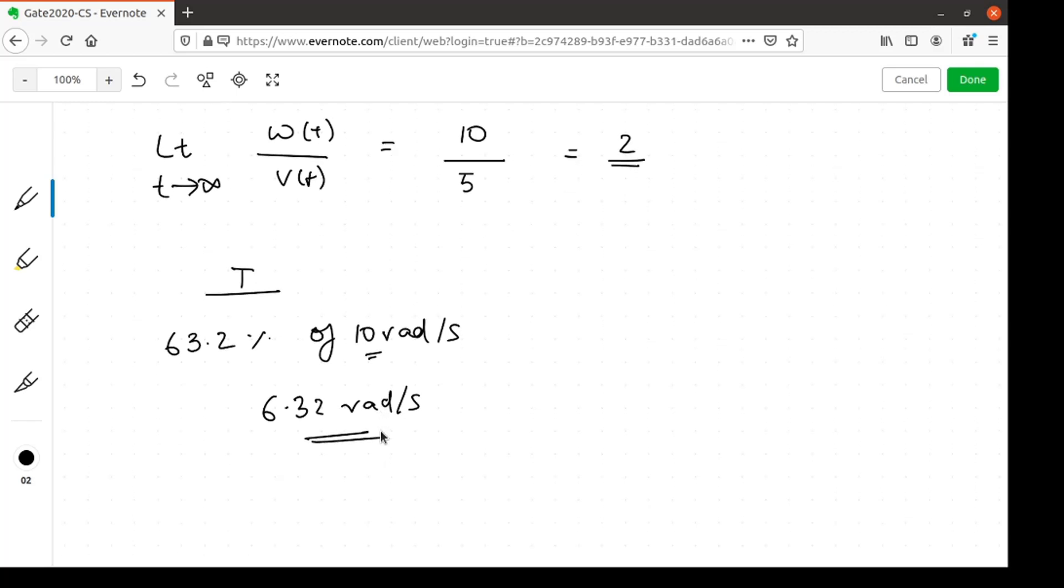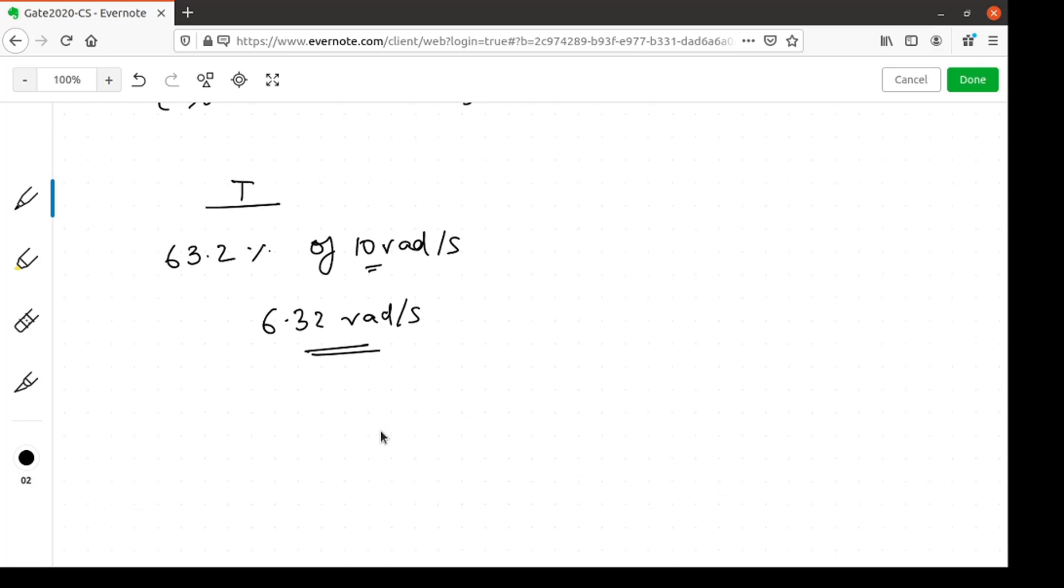In the question, it is already given that the output reaches 6.32 radians per second in 0.5 seconds. So, the question actually gives us the time constant of the system, it is 0.5 seconds.